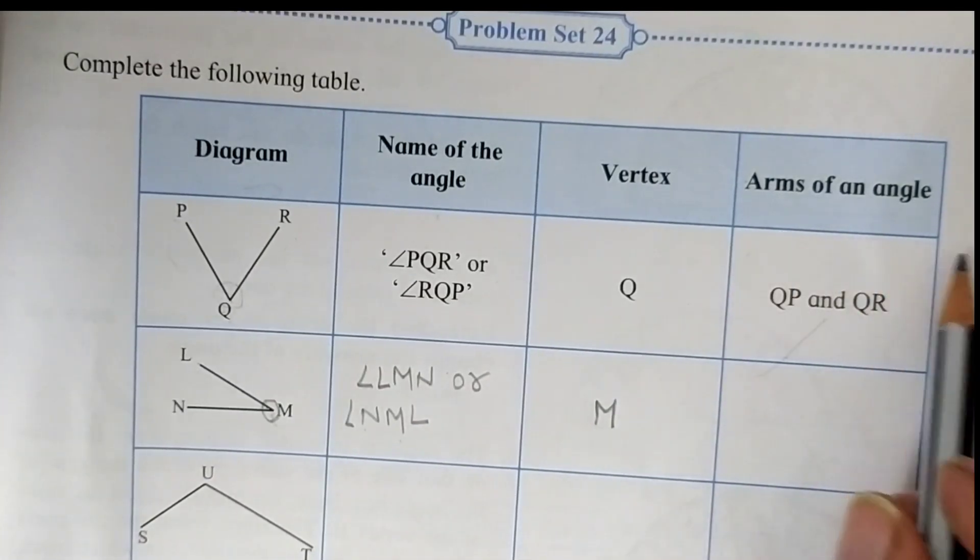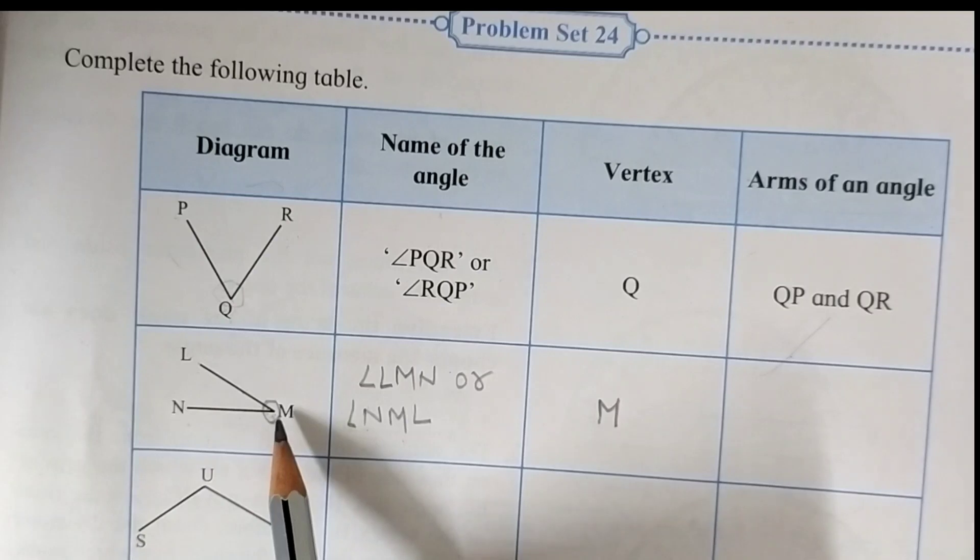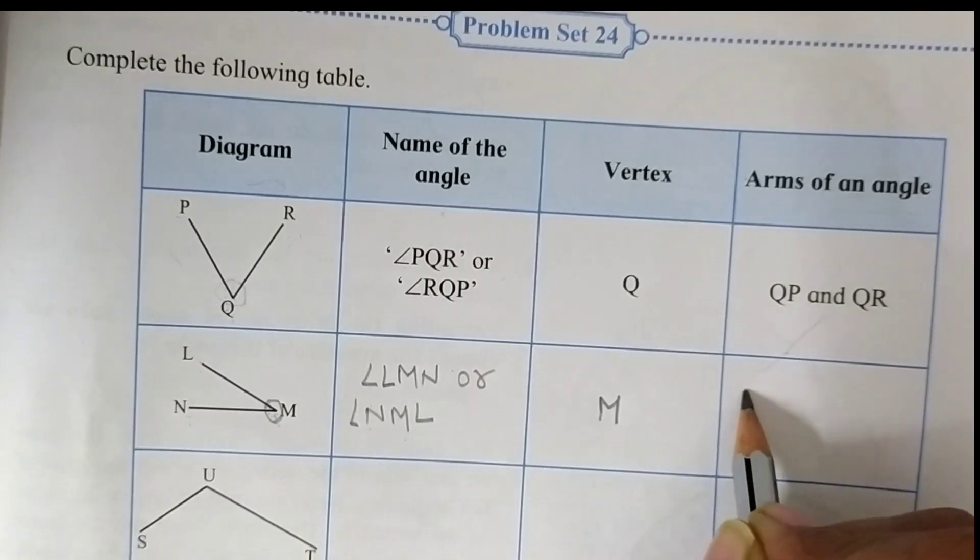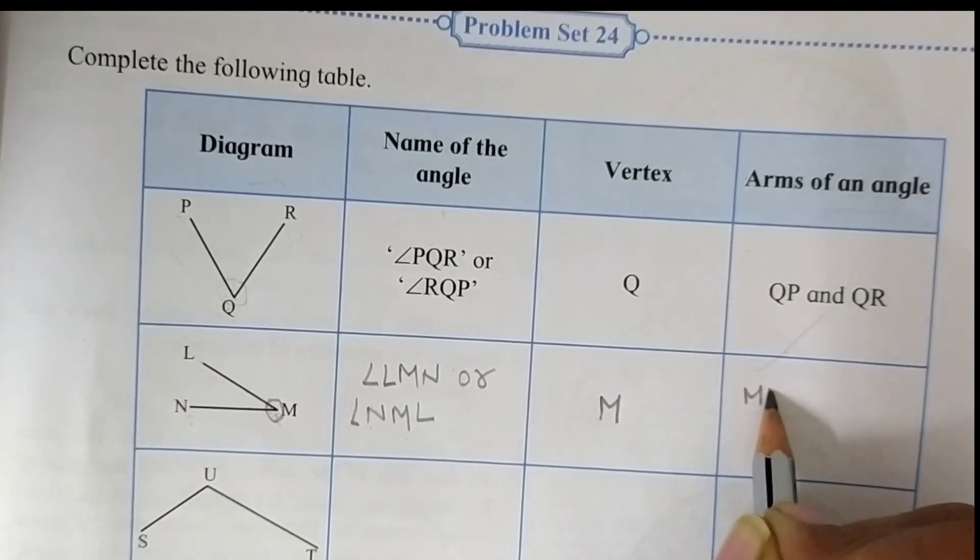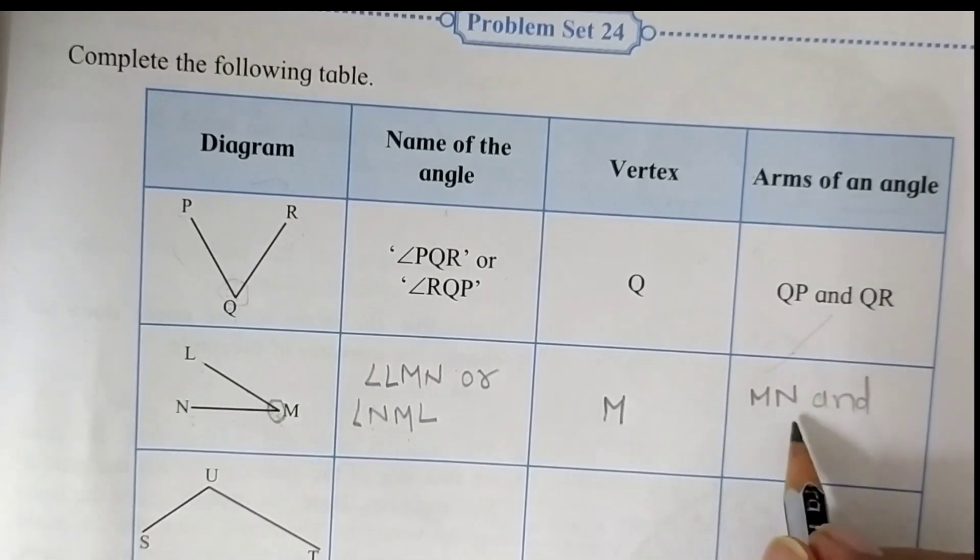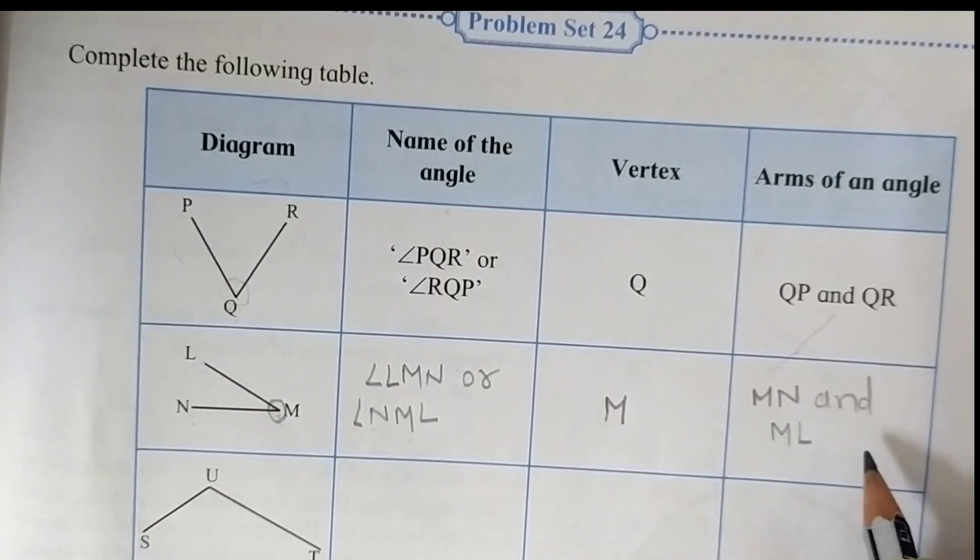And arms of an angle are MN, start from our vertex, MN and ML. These are the arms of given angle.